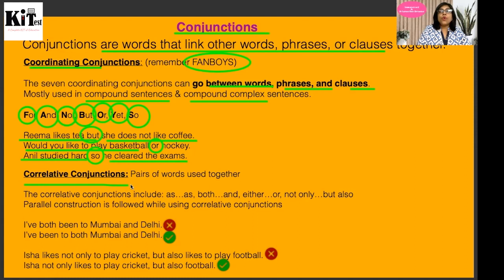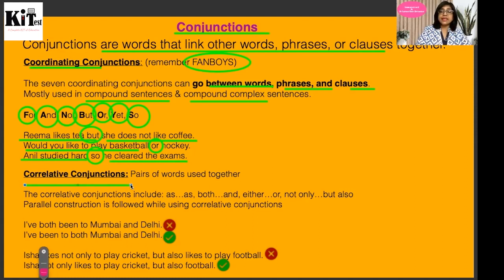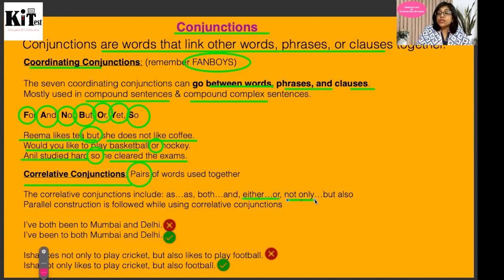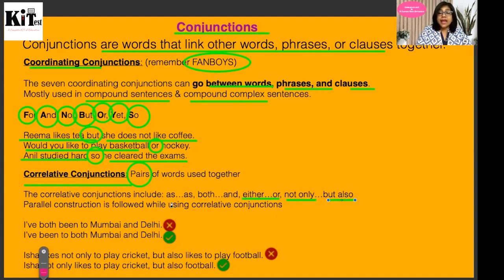The second type is correlative conjunctions. These show correlation within a sentence, and often they are found in pairs — such as 'both...and,' 'either...or,' 'not only...but also.' With these, you get parallel construction in the sentence. Let's look carefully at an example.